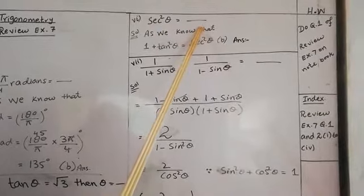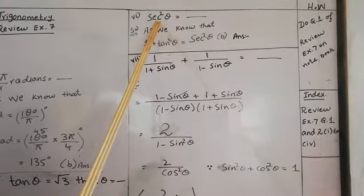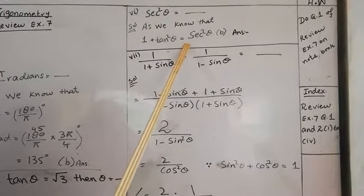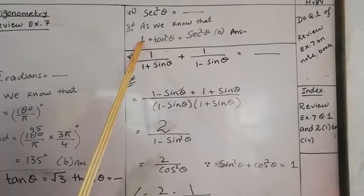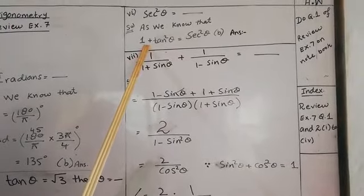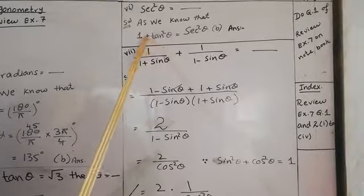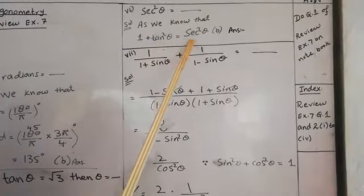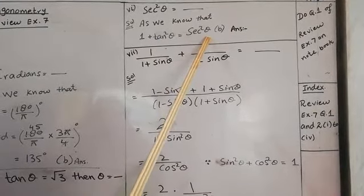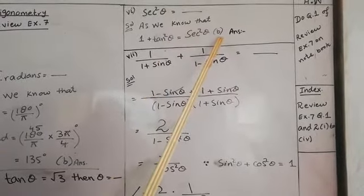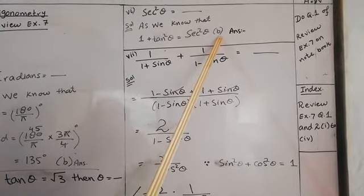MCQ number 6: sec²θ equals — using the identity, we know that sin²θ + cos²θ = 1, and the second identity is 1 + tan²θ = sec²θ. So the right option is option B: 1 + tan²θ.